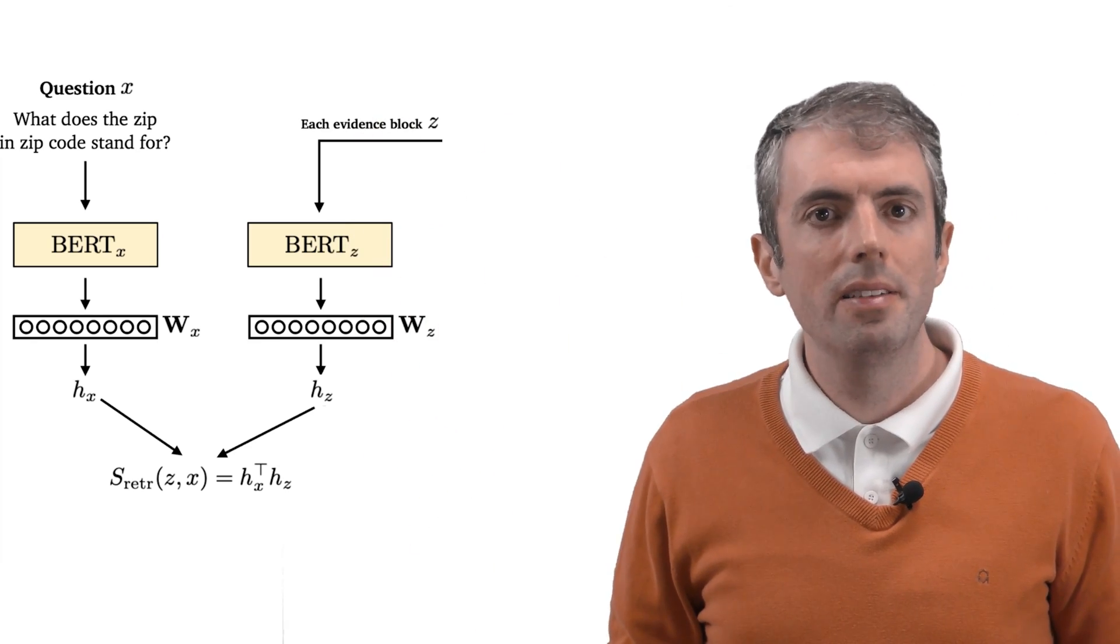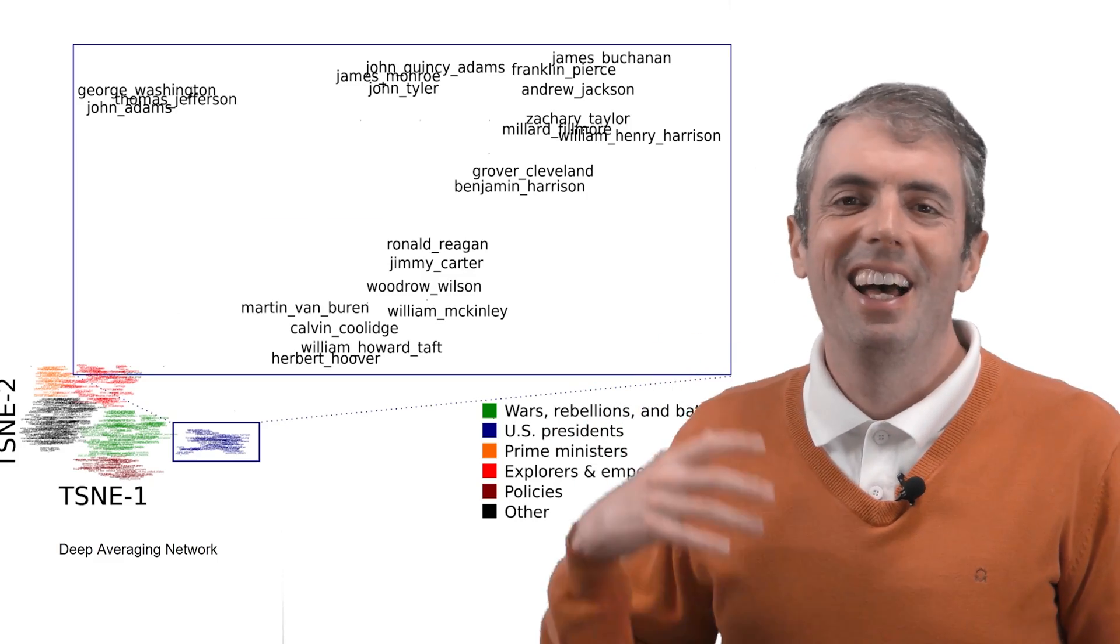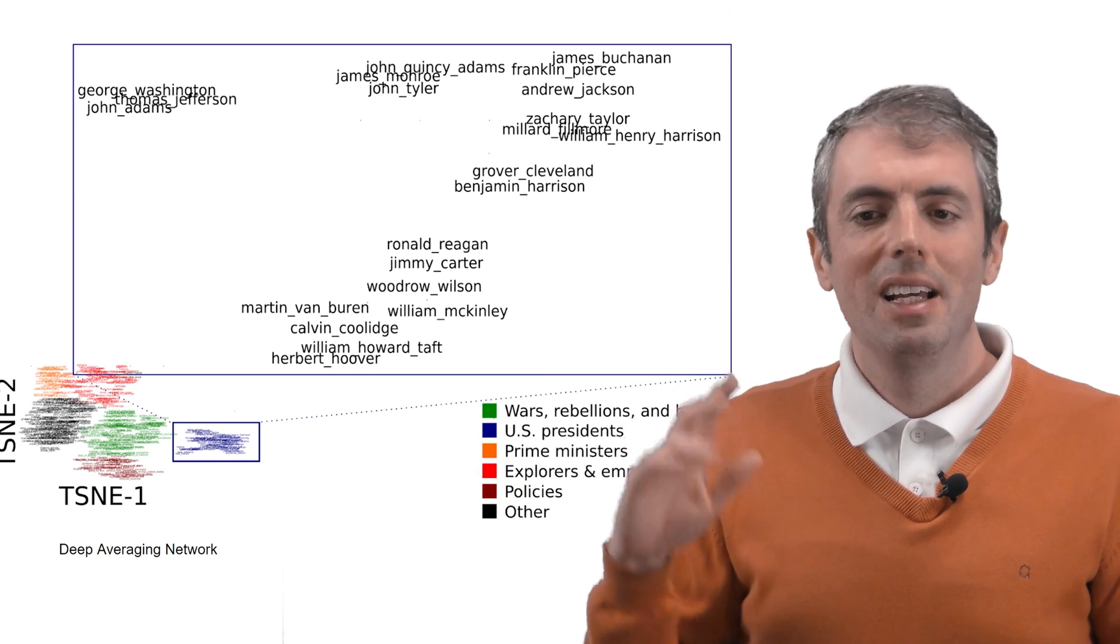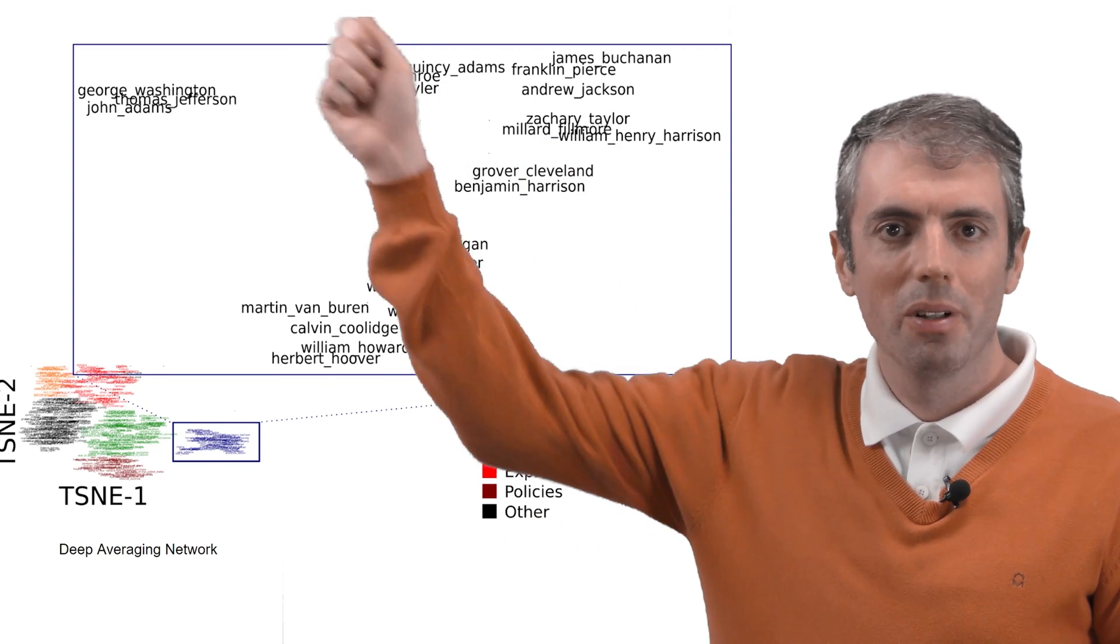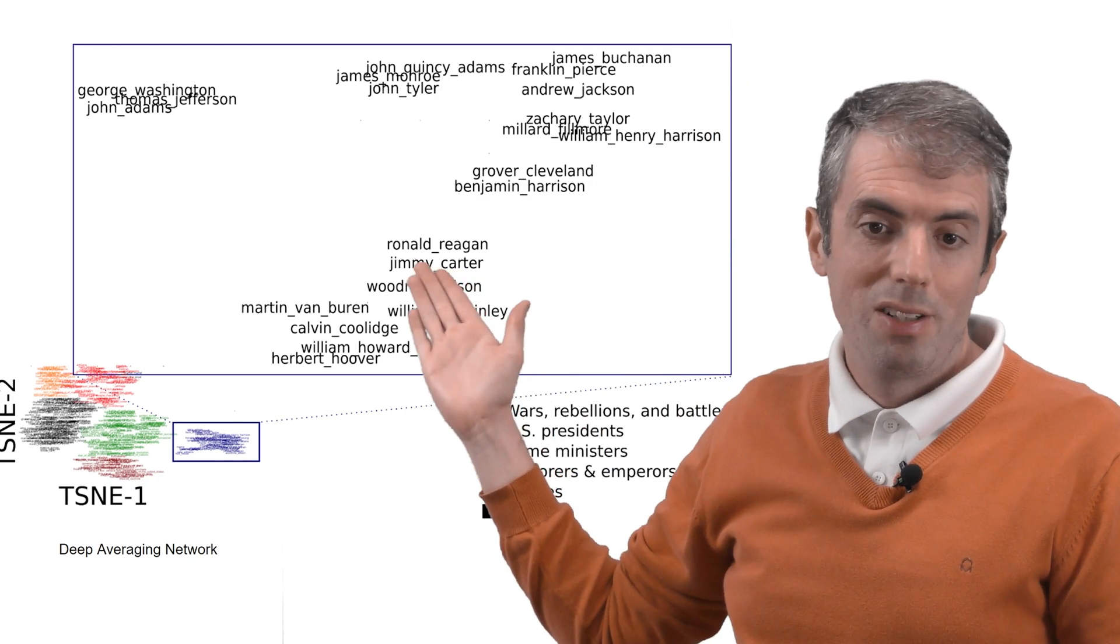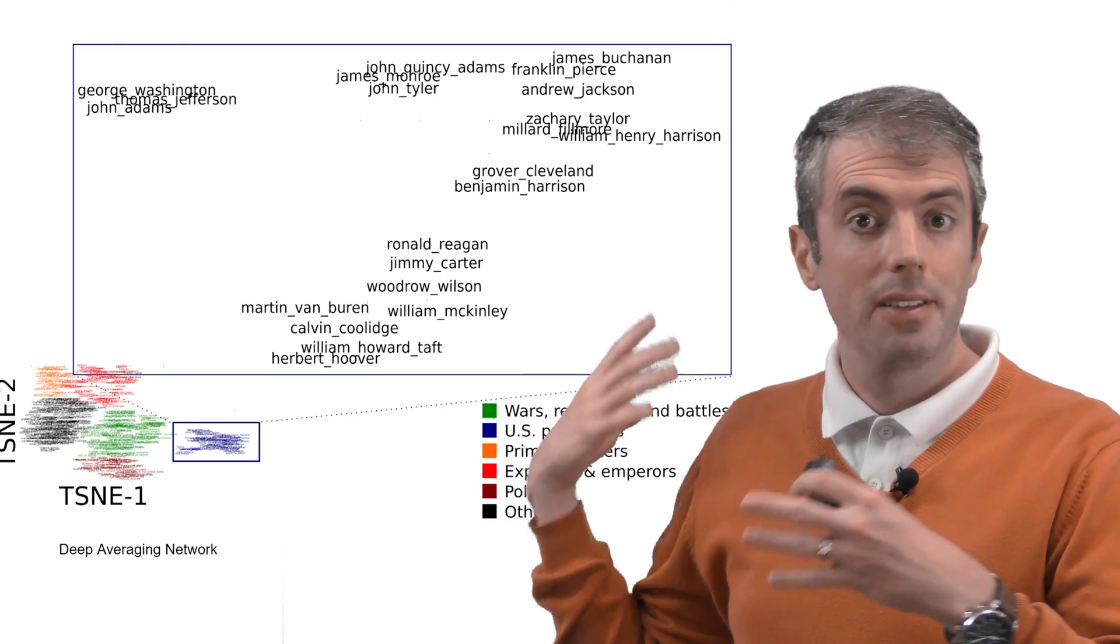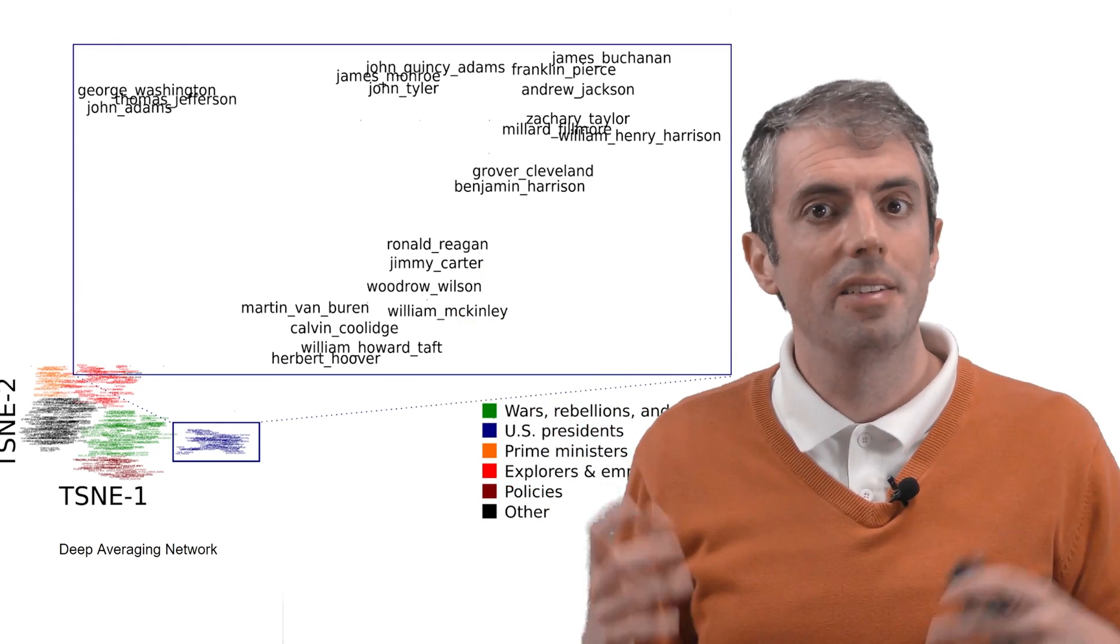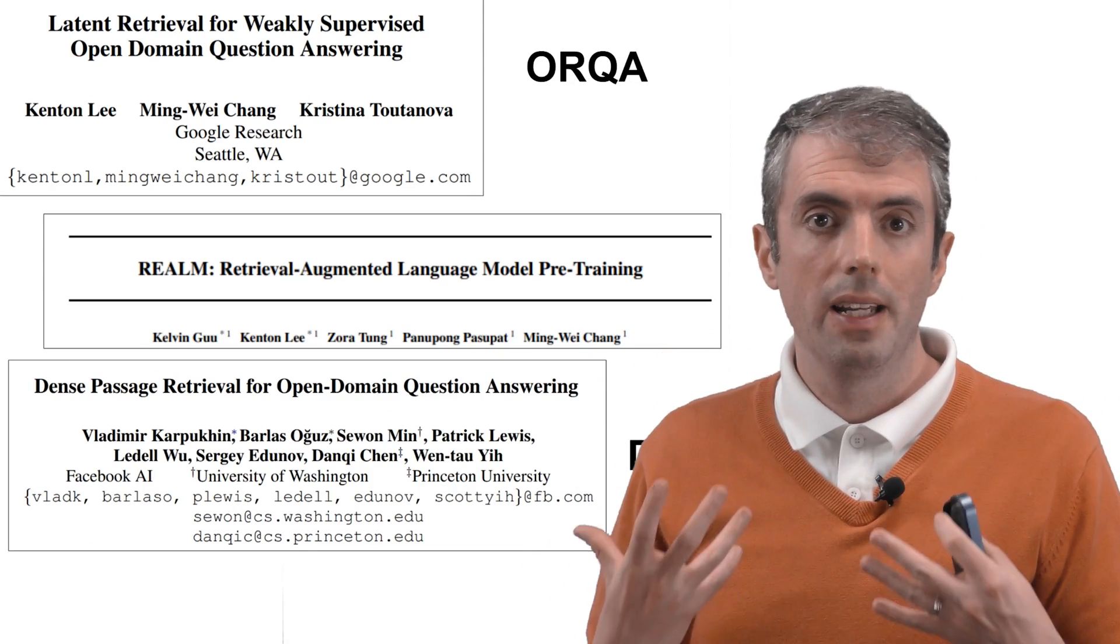And you can use your favorite neural network to encode both sides. Today you'd use BERT to do this. In 2015, we used our deep averaging network. Here are, for example, the US presidents going in a clockwise order from the founding fathers to the 19th century presidents to the 20th century presidents. And this structure is present in hundreds of dimensions here. We've projected it down to two dimensions with a t-SNE projection.